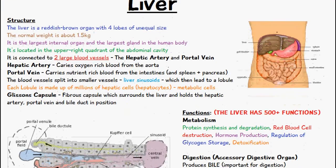You can see it here on the upper right, and it's connected to two large blood vessels known as the hepatic artery and the portal vein. The hepatic artery carries oxygen-rich blood from the aorta, and the portal vein carries nutrient-rich blood from the intestines, spleen, and pancreas.